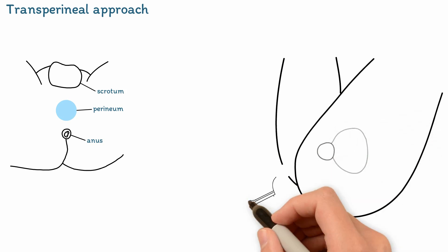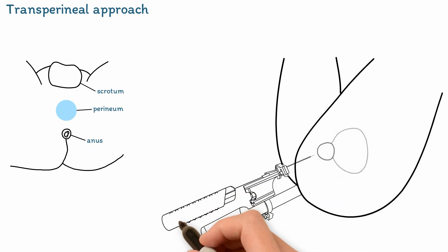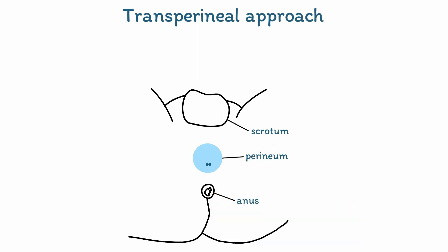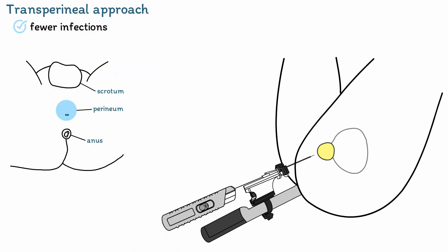Unlike other transperineal biopsies that use up to 50 punctures, Precision Point uses only two simple perineal punctures. The result is fewer infections and greater cancer detection than transrectal biopsies.